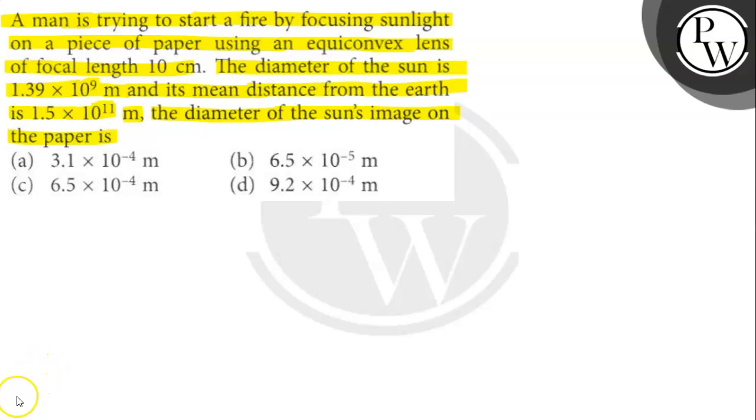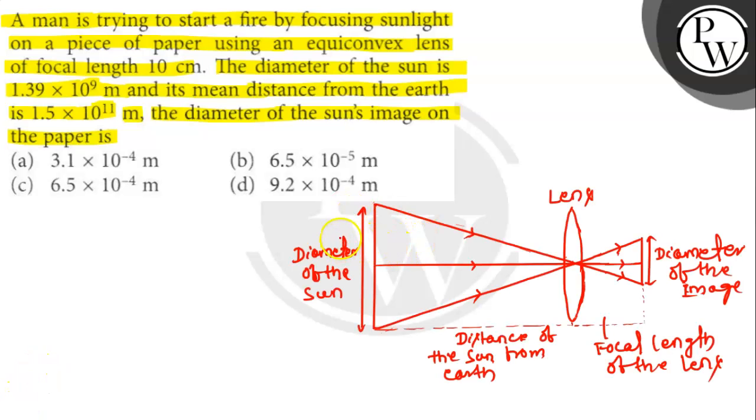So let's draw the diagram first. So this is the diagram according to the question. What is given here: object distance U is 1.5 × 10^11 meters, image distance V is 10 cm, that is 0.1 meter. The diameter of the sun O is equal to 1.39 × 10^9 meters.